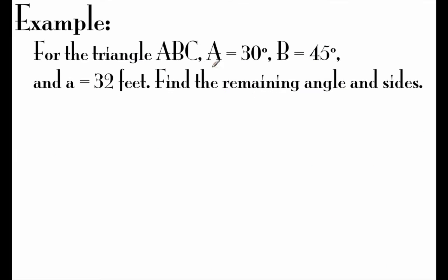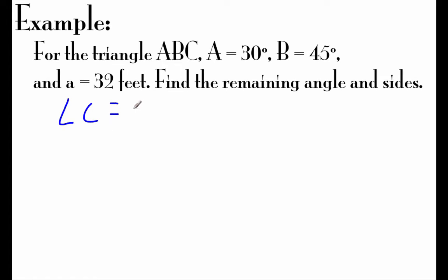In this next example, we've got triangle ABC again. Angle A is 30 degrees, angle B is 45 degrees, and side A is 32 feet. Just like the last one, we've got two angles, so it's easy to find the missing third angle — since the angles have to add up to 180 degrees, angle C has to be 105 degrees.